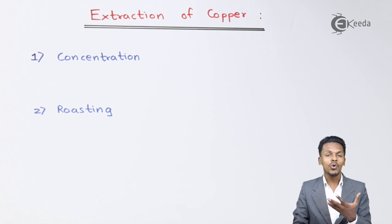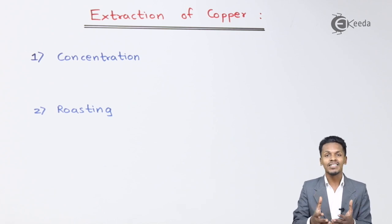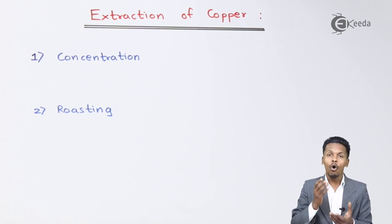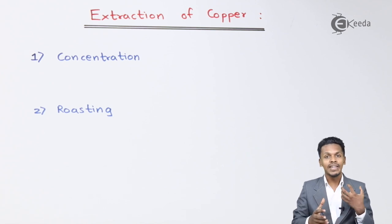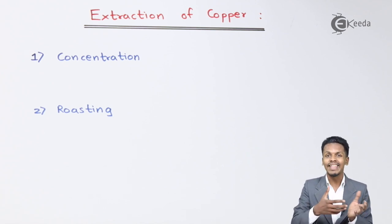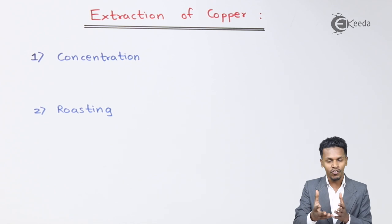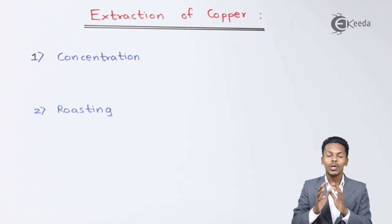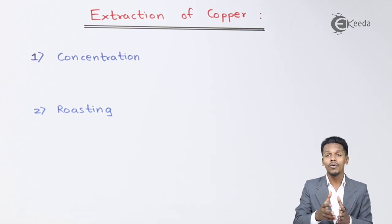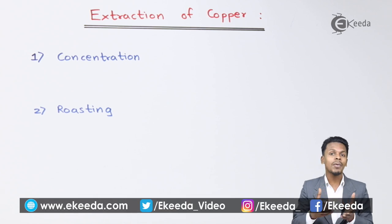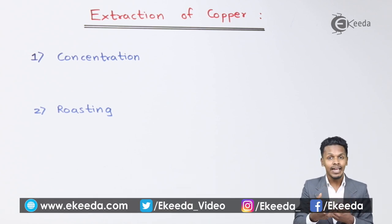The ore we are talking about is copper pyrites. Whenever copper pyrites are obtained during mining, they are basically crushed and then taken through the froth flotation process. This is because copper pyrites consist of sulphur, and the froth flotation process only works with sulphide ores. This is how we obtain copper pyrites that are free from gangue or other impurities.